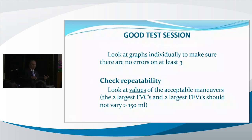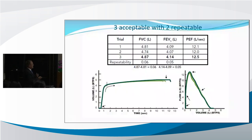The repeatability of the first test versus the next largest did not change with the new standards — it stayed at 150 milliliters. Here are maneuvers that are very repeatable: the FVC repeatability is 60 milliliters (0.06 liters) and for FEV1 the repeatability is 50 milliliters. Very common repeatability, and even the peak flows are very repeatable.